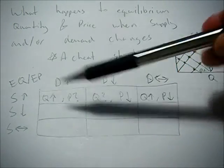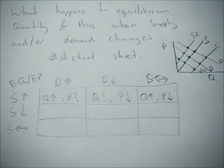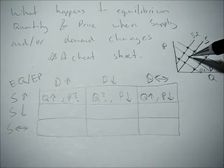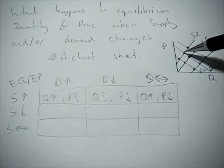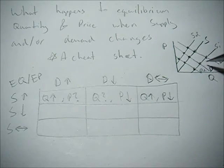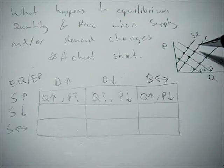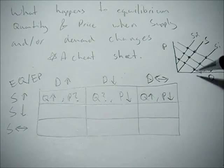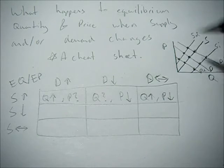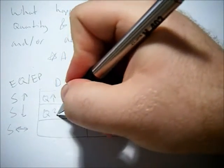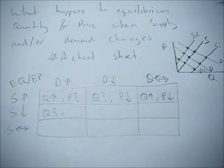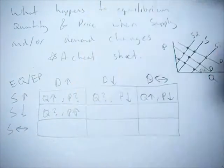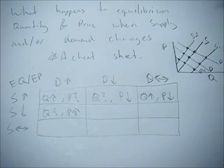Now let's do supply going down and demand going up. Supply decreases, which is an upward shift, and demand increases, meaning a rightward shift. We go from the original point to the new equilibrium point. The change in Q is again ambiguous — we don't know if quantity goes up or down — but we do know the equilibrium price will be higher.